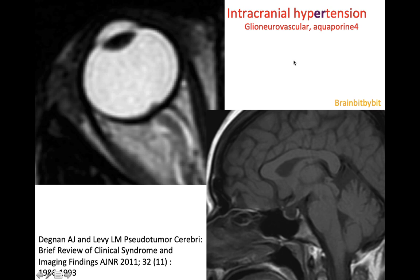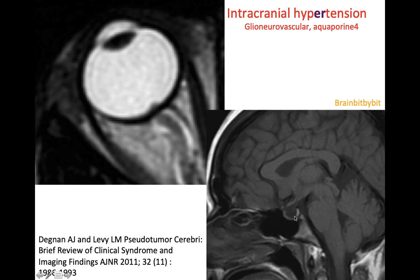Intracranial hypertension is the opposite of intracranial hypotension. I'm not going to go into detail about that one, because the pathogenesis is much more complex — it probably has something to do with the glymphatic neurovascular unit, the glymphatic system, and aquaporin-4. It occurs more often in obese patients, because of high intracranial pressure, which is also associated with a higher central venous pressure, and therefore higher intracranial pressure.